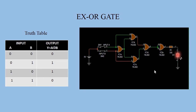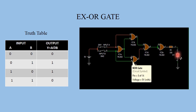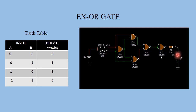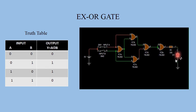Third condition: A=1 (switch 1 is closed), B=0 (switch 2 is open). In this condition, from here we get 0. This 0 is connected here and also here. This is 1 input line and this is 0 input line, so from here we get 0 and from here we get 1. This 0 output is connected with the inverter circuit. Since 0 is inverted, from here we get 1, so LED is in on condition. This is the third row of the truth table.